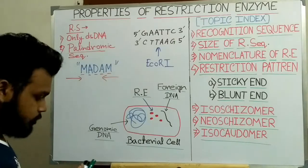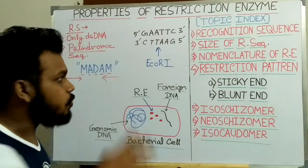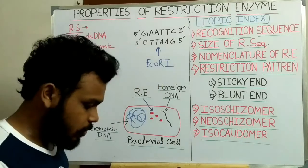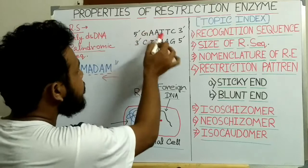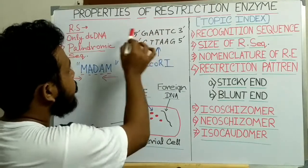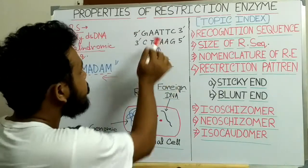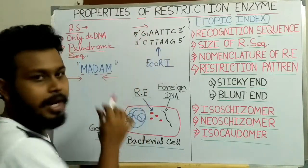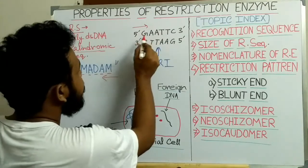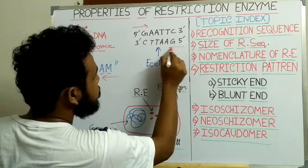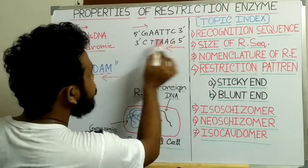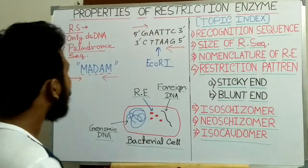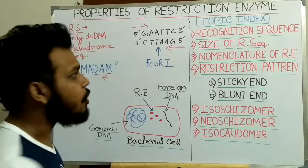Now come back to this recognition sequence. Why is this recognition sequence called the palindromic sequence? It is called palindromic because if we read this recognition sequence from the 5' end in both strands we get the same sequence. That means if we read the upper strand from the 5' end we get G-A-A-T-T-C, and in the lower strand reading from the 5' end we also get G-A-A-T-T-C. That's why this recognition sequence is called the palindromic sequence.